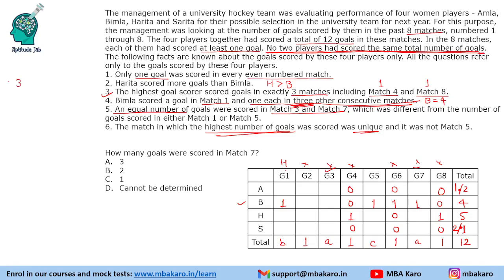Match 3 and match 7 have equal goals (A each). We have 4 remaining odd-numbered match slots. If A=1 for matches 3 and 7, we're left with 6 goals for matches 1 and 5. Match 1 must be unique highest, so the split has to be 4 and 2. If A=2, we'd have 3 and 1 left, and if A=3, there's no valid possibility.